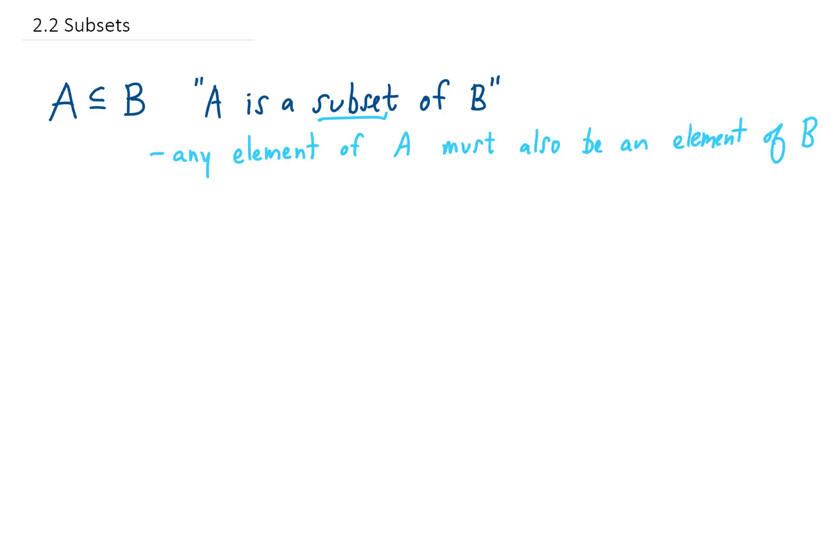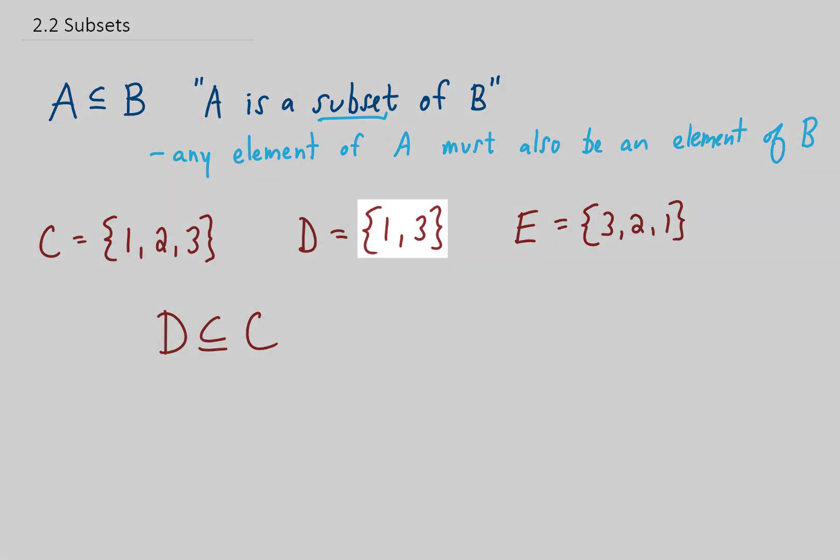Let me write out a few small sets to demonstrate. I just made up sets C, D, and E, and set D has the fewest number of elements in it, so we might ask the question, is D a subset of, say, C? And the answer is yes, D is a subset of C, because every element in D, that means one and three, are also included in C.